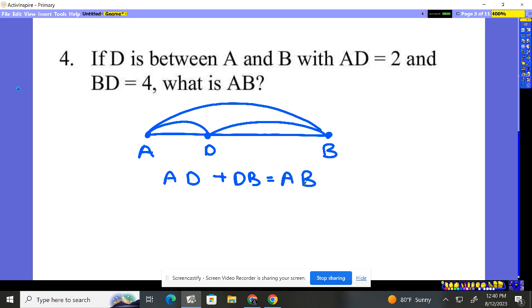Now what do they tell us? AD, this piece, is two—that's its length. And BD, or DB, same thing, is four. So what is AB? Well, that was a pretty easy question. AB must be six.